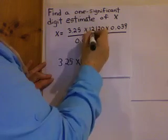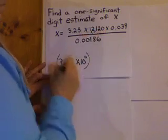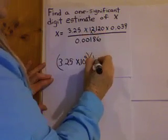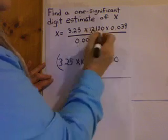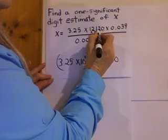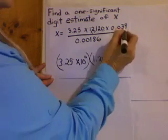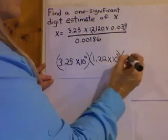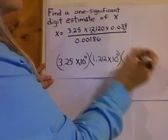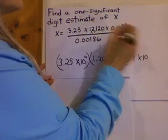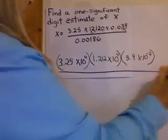Next one. Scientific notation. We'll put the decimal point there. So, that one's going to be 1.212 times 10 to the 1, 2, 3, 4 to the 4th. Okay, next one. Decimal point should go there. 3.9 times 10 to the 1, 2, minus 2. Hope you know why that one's a minus.